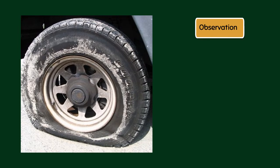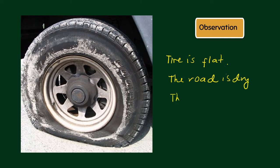So what observations can we make? The tire is flat. Next, the road is dry. What else — something that we can see? The surface of the tire is still rough.